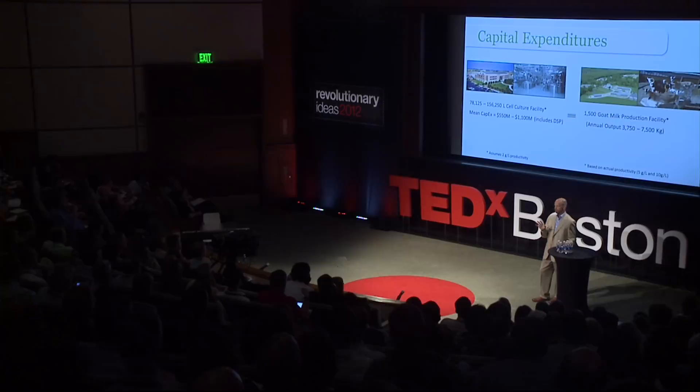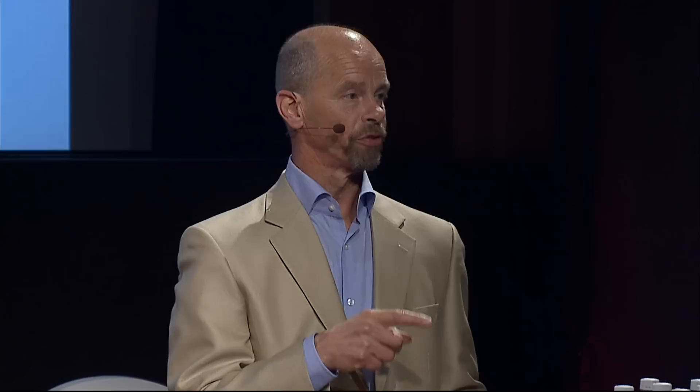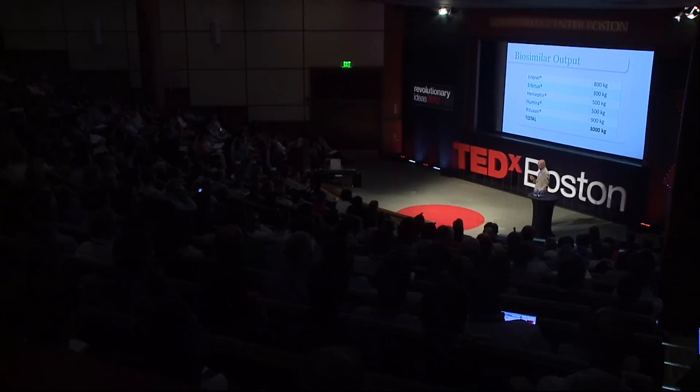We think we have a couple of advantages here, and the goal is to make a less expensive product. One is that we have a bioreactor that lives on hay. Secondly is the capital expense — every one of these blockbusters has had to have a facility built to produce a product, and many of them are well over a billion dollars. We estimate that a third of that cost is for those stainless steel tanks and the supporting structures. We've put less than 10 percent of that amount into a farm, and in that farm we have the capacity not for one, but all of the top five of these drugs.